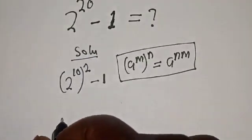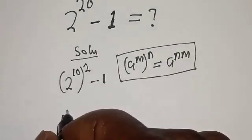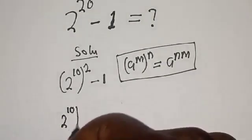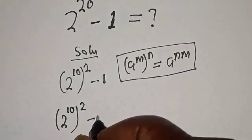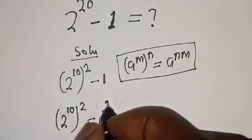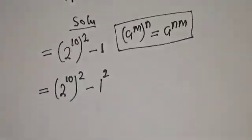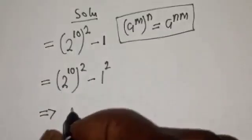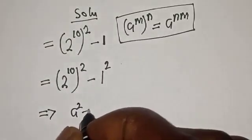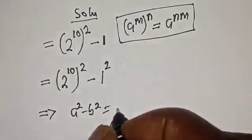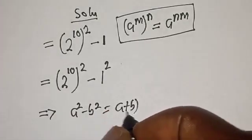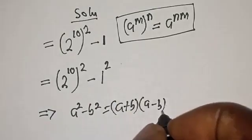So (2^10)^2 - 1 is the same thing as (2^10)^2 - 1^2. This is a difference of two squares. a^2 - b^2 = (a + b)(a - b).